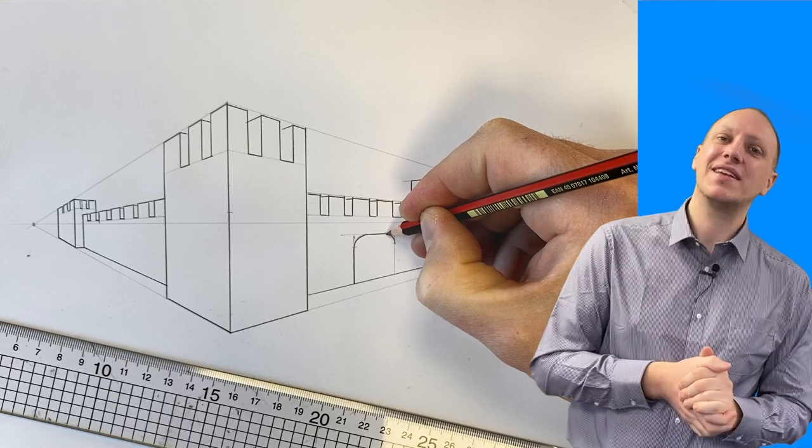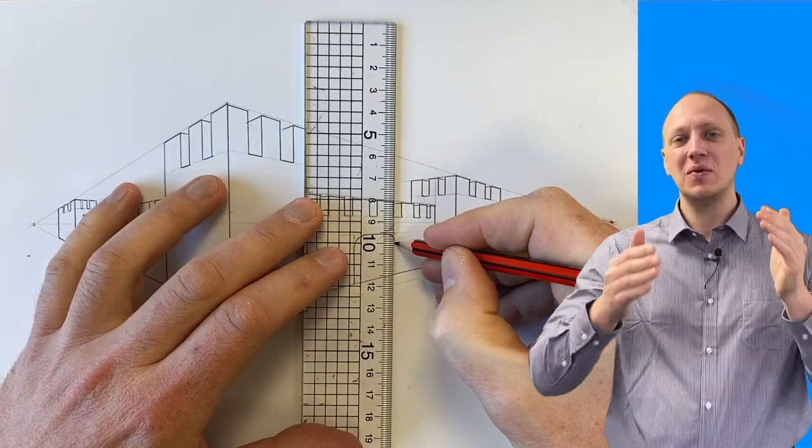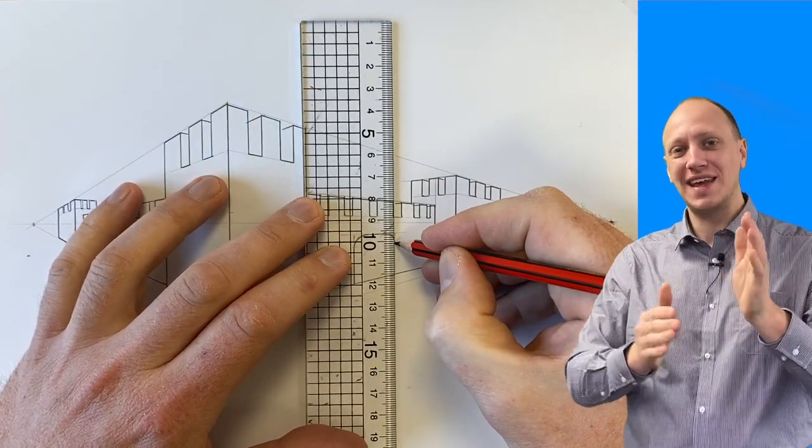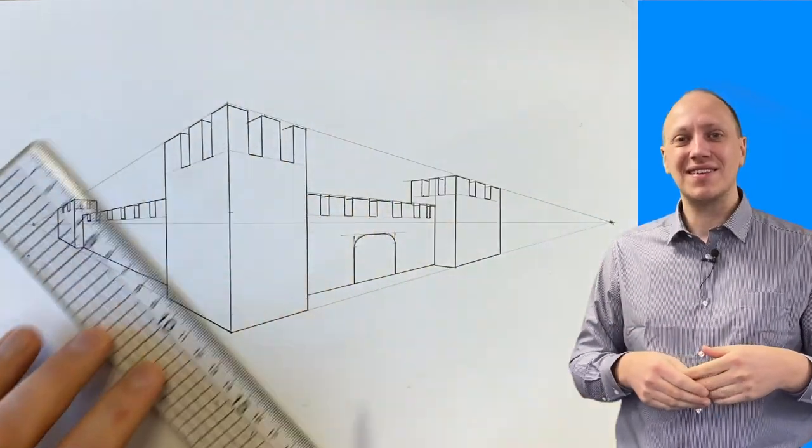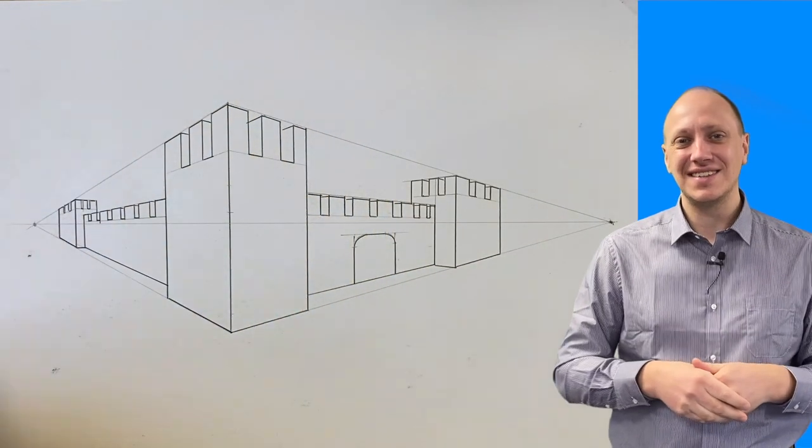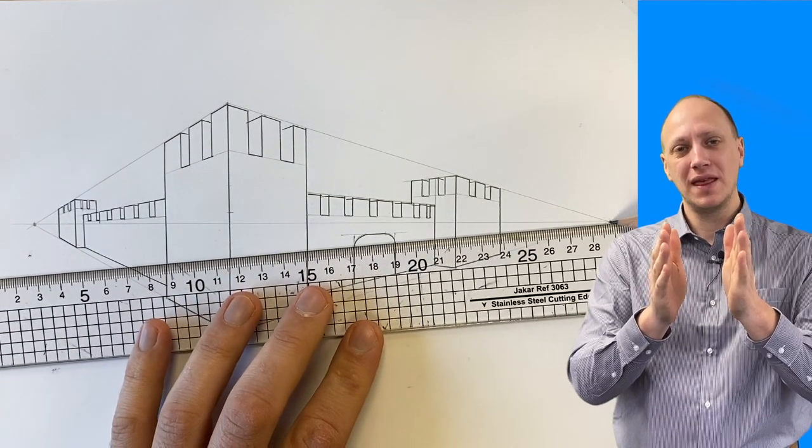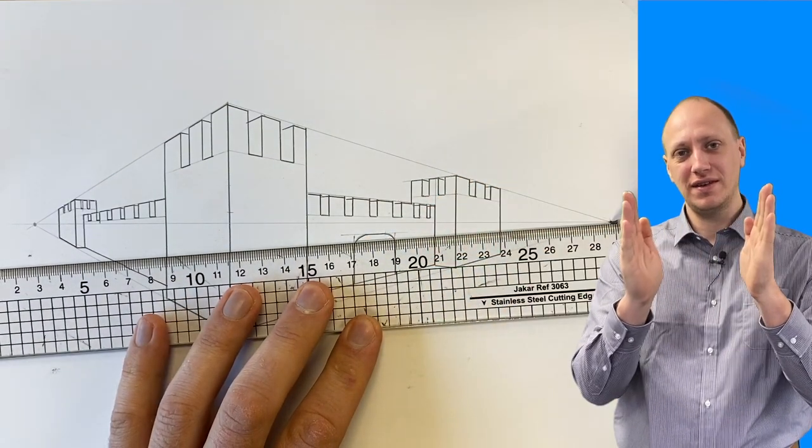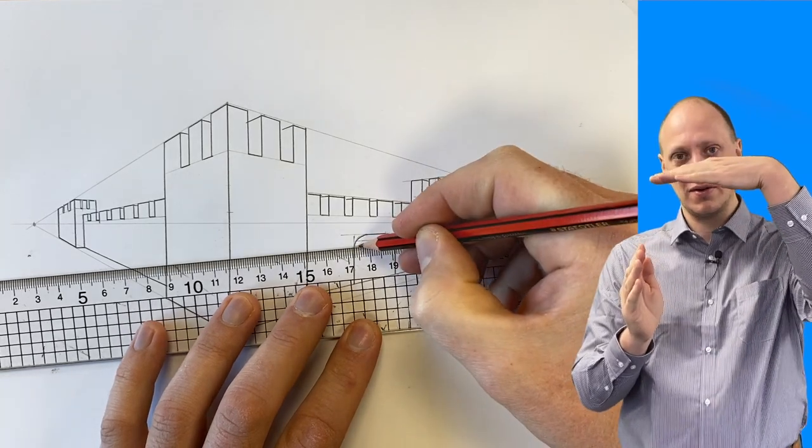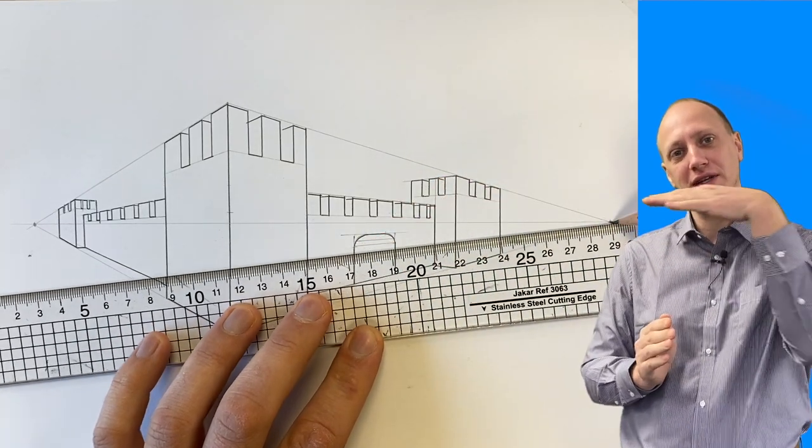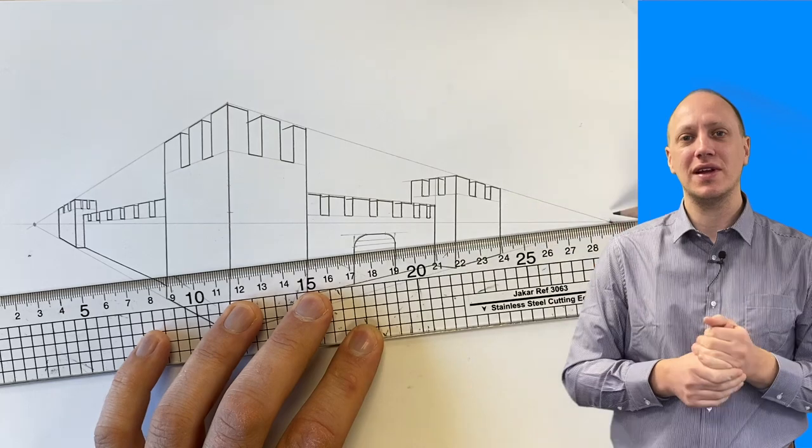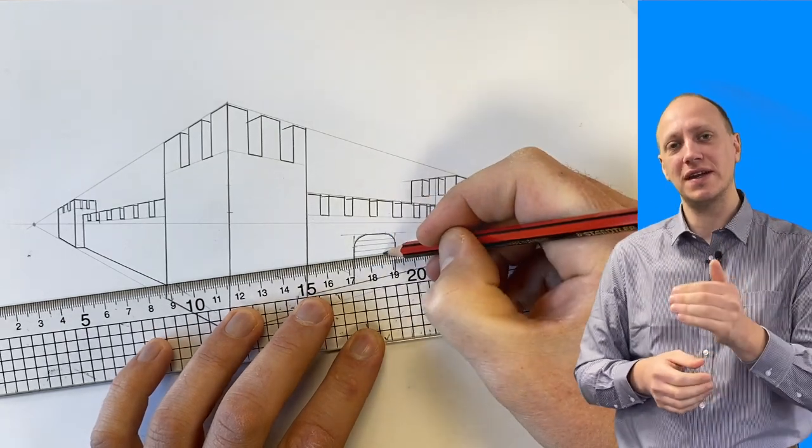Now inside of this doorway, I decided to add a portcullis, which is the metal grid thing that drops down so that arrows can still be shot out of the castle against attackers, but prevents people from getting through. Now this portcullis is made up of vertical lines, and then lines that come across, but they all go to the vanishing point. So make sure that your lines that go across your page go to the vanishing point.